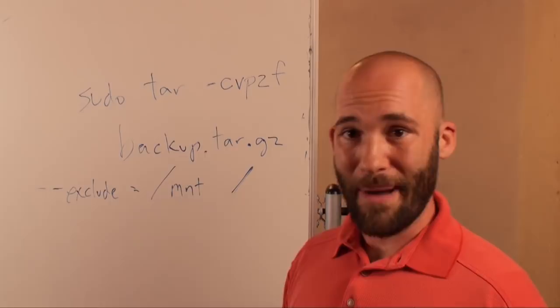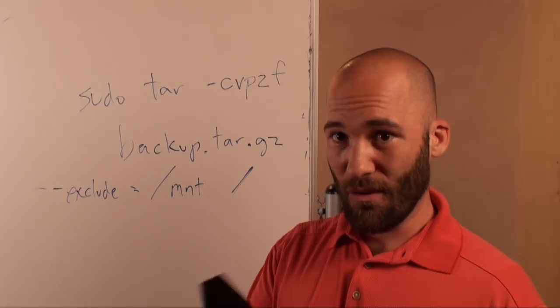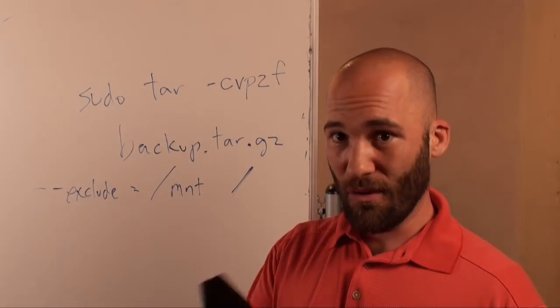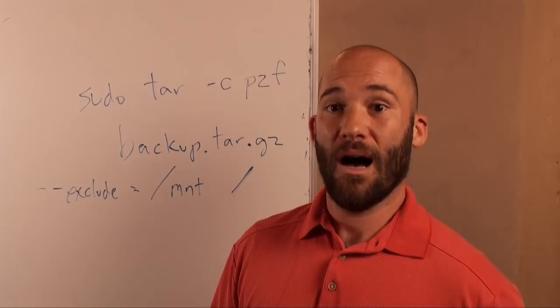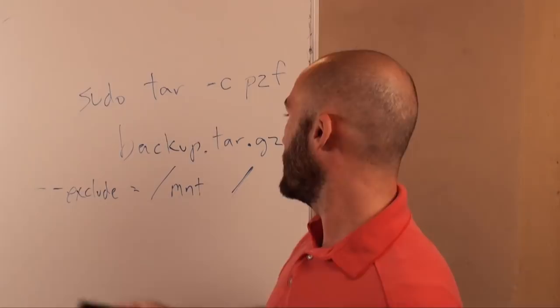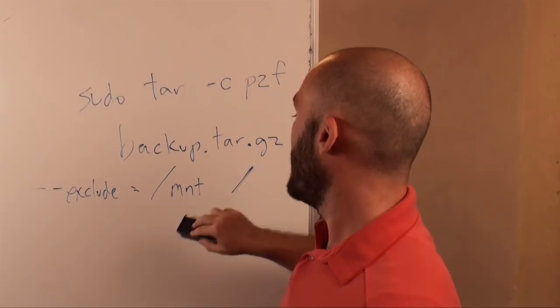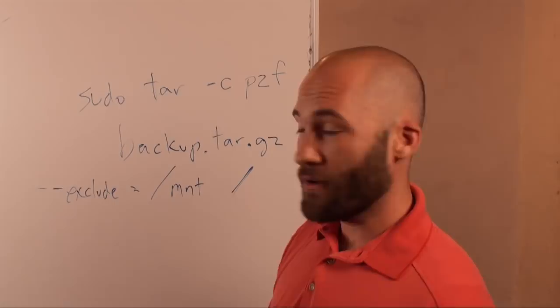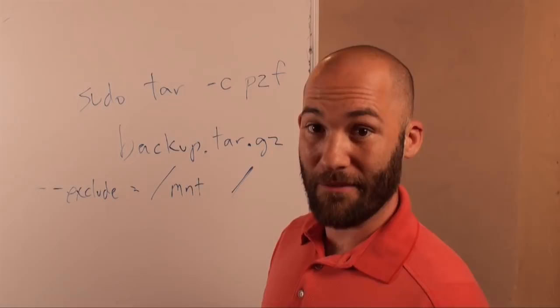So let's go to the computer and I'll show you how this works. It really is dirt simple. Just remember: sudo, tar, arguments. The only argument you may not want is verbose — that just tells you what's going on. Then you do the backup file name — call it backup.tar.gz to show it's a compressed tar file. If you want to exclude folders, do space, hyphen, hyphen, exclude, equals, then the folder path. Then say what you want to back up — root for the whole computer, or /var/www for just the www folder.